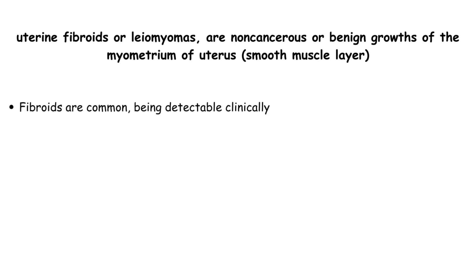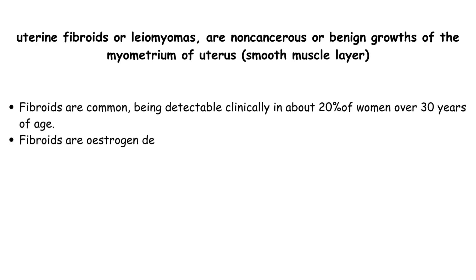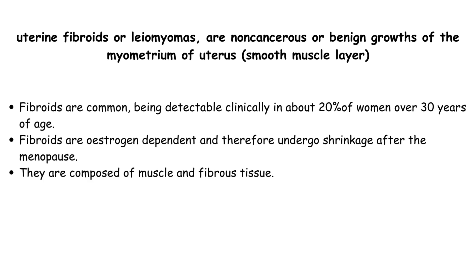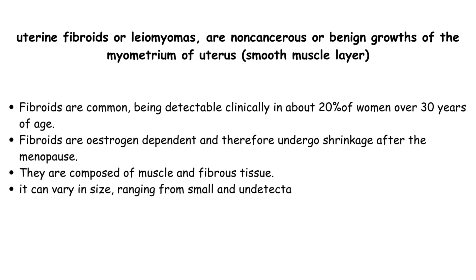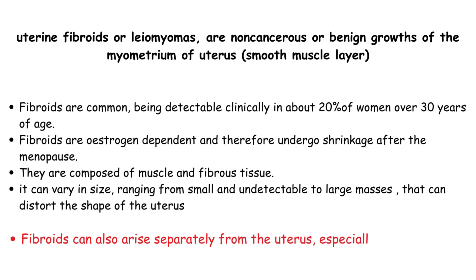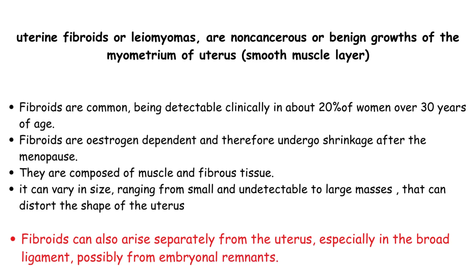Fibroids are common, being detectable clinically in about 20% of women over 30 years of age. Fibroids are estrogen-dependent and therefore undergo shrinkage after the menopause. They are composed of muscle and fibrous tissue. They can vary in size, ranging from small and undetectable to large masses that can distort the shape of the uterus. Fibroids can also arise separately from the uterus, especially in the broad ligament, possibly from embryonal remnants.